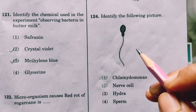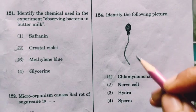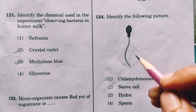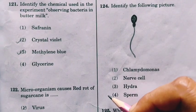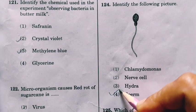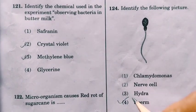Here is a diagram. This is the picture of a sperm cell, which is the male gamete.